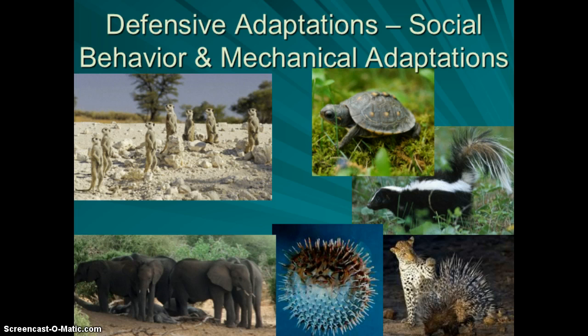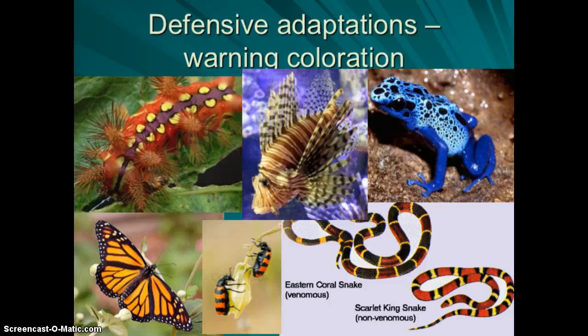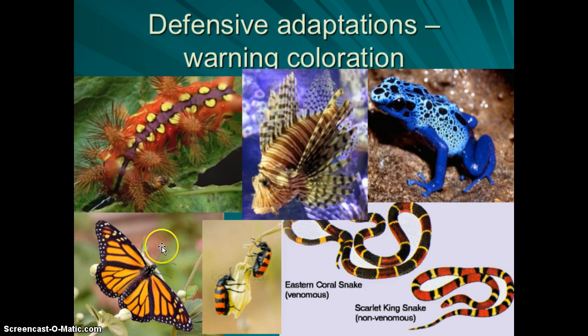Many animals are poisonous and advertise this with warning coloration — bright colors and noticeable patterns meant to deter predators. This leads to evolutionary copycats that use mimicry to look like the poisonous ones without actually being poisonous. For example, one snake copies the pattern of a poisonous species, and the viceroy butterfly mimics the poisonous monarch butterfly. These bright colors signal: stay away.